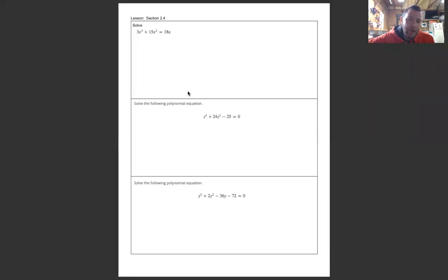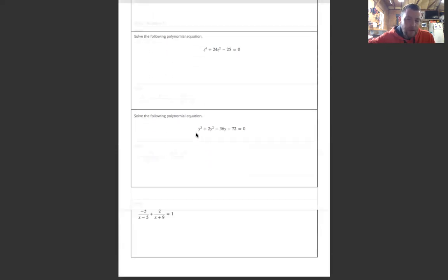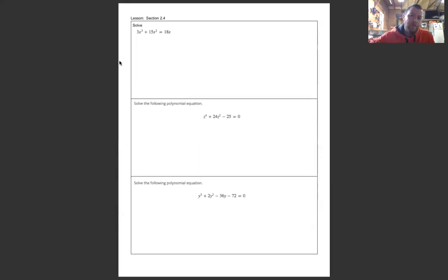Section 2.4, higher degree polynomial equations. So this is equations that have x to the fourth or x cubed, something like that. It's something higher than x squared. And you're going to use the same techniques as what you've done in the last section 2.3. So it's not very long. It's only these three problems.